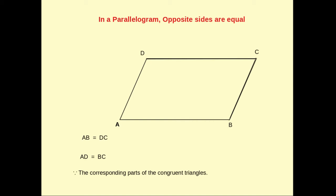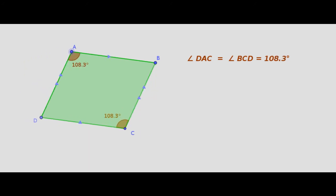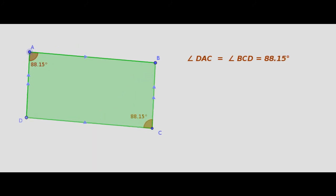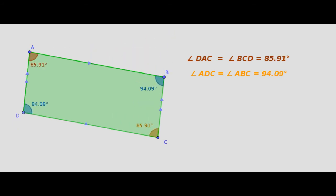In a parallelogram, pairs of opposite angles are also equal. We may visualize this with any measurement of the parallelogram — the opposite angles are equal. Here angle DAC is equal to angle BCD. We can vary the measurement of the parallelogram and angle D remains equal to angle B.